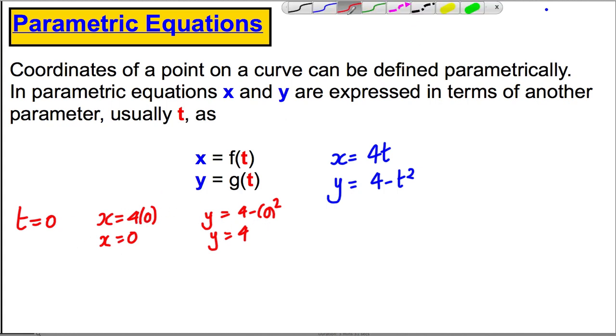Going backwards, what you could do is if you were given an x value, say if you were told x was equal to 4 at any given point, then you could substitute back in here and you could say that 4 is therefore equal to 4t, and dividing by 4, t must be 1. Using t as 1, you could find the y value, y therefore must be 4 minus 1 squared, and y must be equal to 3.